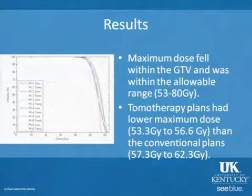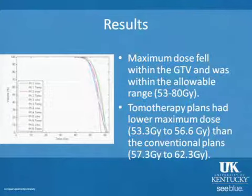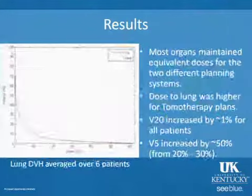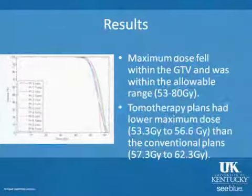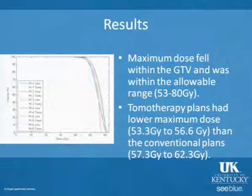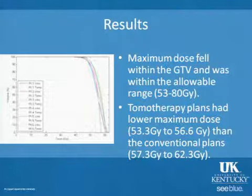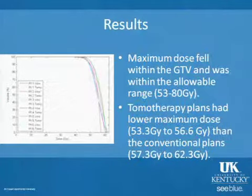For results, the maximum dose fell within the GTV and was within the allowable range of 53 to 80 gray. The tomotherapy plans had a lower maximum dose than the conventional plans, giving a sharper DVH curve. Because tomotherapy is IMRT-based and tries to make the dose homogeneous, you really have to force a more heterogeneous dose distribution to achieve a sharper dose gradient with tomotherapy plans.